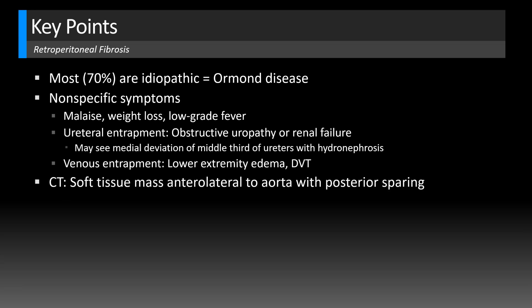On CT, you'll typically see a soft tissue mass anterolateral to the aorta with posterior sparing, and that's very helpful to differentiate from the main differential for retroperitoneal fibrosis, which is retroperitoneal lymphoma. Lymphoma tends to be a little more bulky and will also extend posterior to the aorta and displace it anteriorly — so you can remember: lymphoma will lift the aorta.